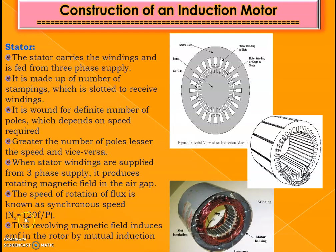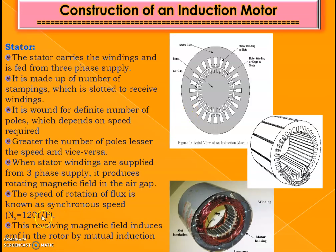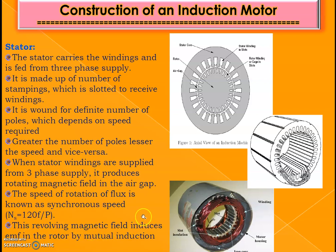The speed of the rotating flux is given by Ns = 120f / P, where f is the supply frequency and P is the number of poles. For example, if f = 50 Hz and P = 2, then Ns = 120 × 50 / 2 = 3000 RPM. If P = 4, then Ns = 120 × 50 / 4 = 1500 RPM. So as the number of poles increases, synchronous speed decreases. Keep in mind that poles always come in pairs, and this creates a revolving magnetic field that interacts with the rotor through mutual induction.